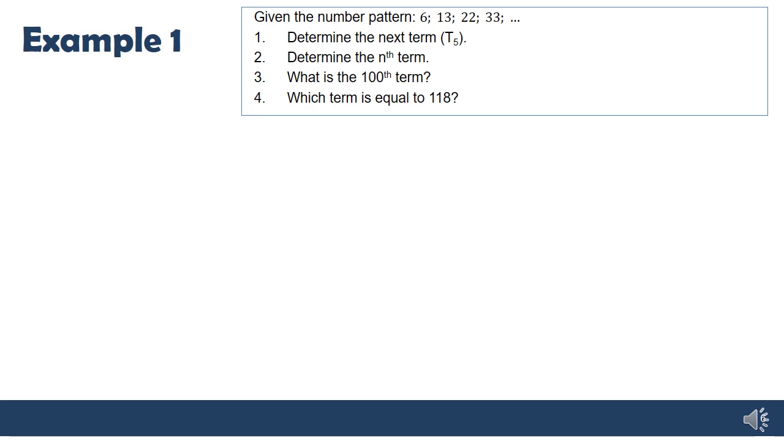Okay, carrying on with the same example, we're now on 3 and 4. Once we have the general rule, these become very easy, right? So the hundredth term, just like a linear pattern, we're going to substitute in n equals 100. And that's our final answer. Three lines, very simple. Show the substitution, show the answer.